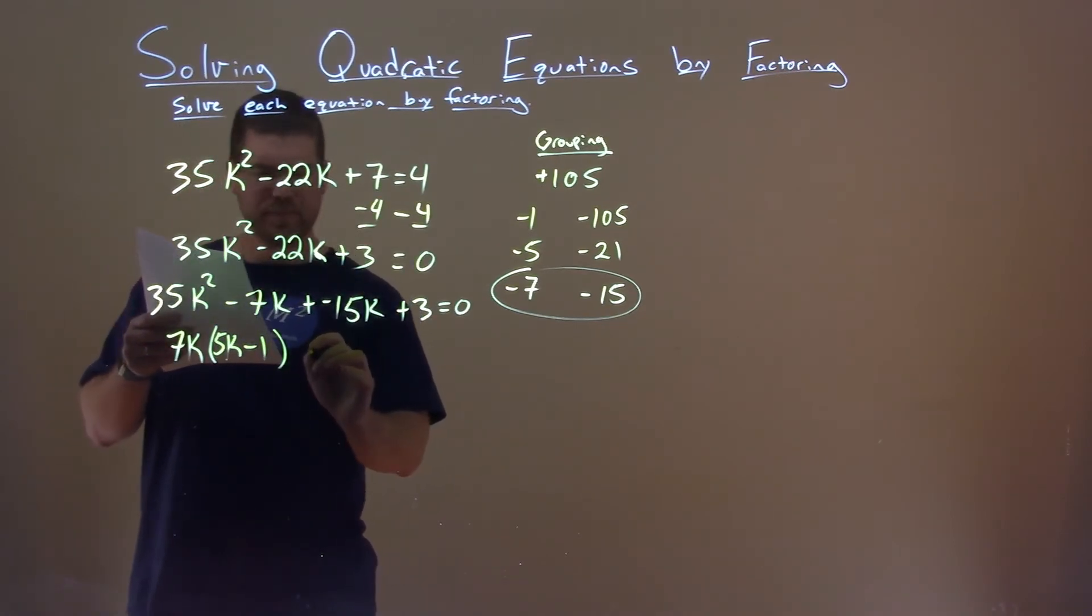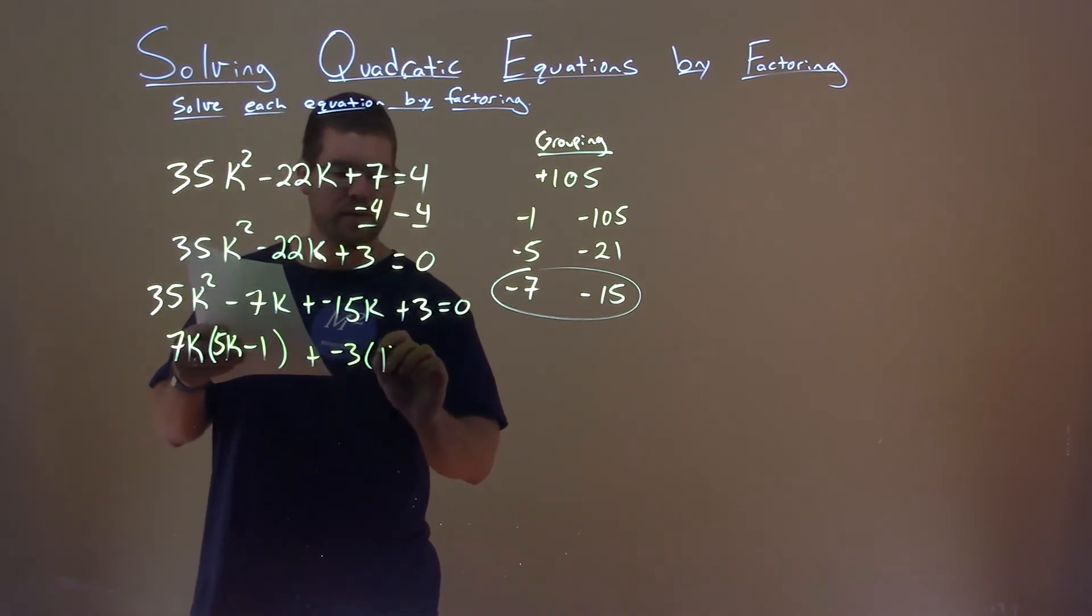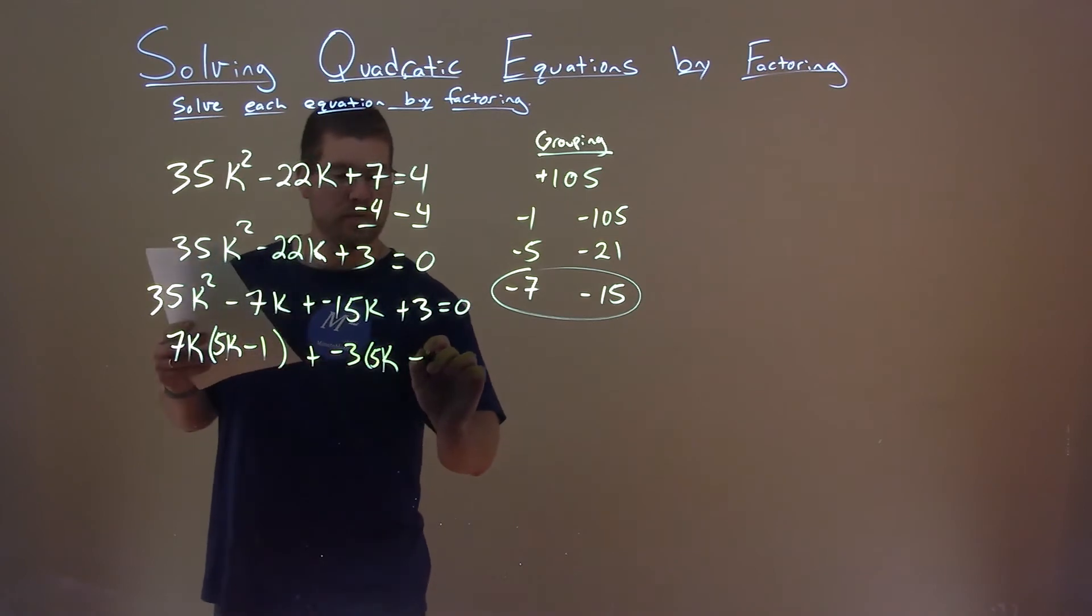Do the same thing with the second part. Negative 3 we can pull out, and we're left with, again, 5k minus 1 again.